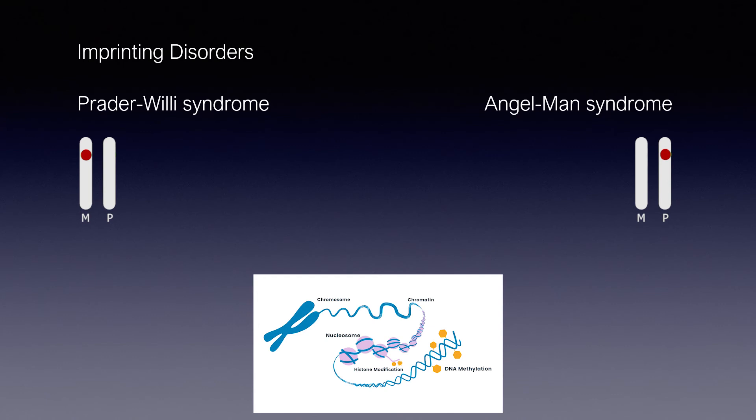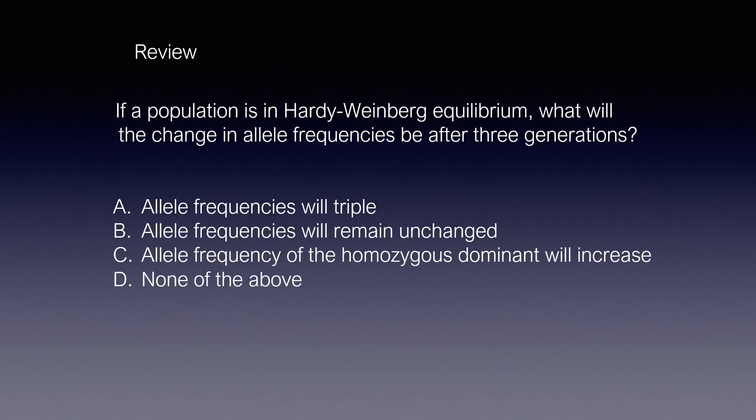The take-home here is that both are caused by an issue with chromosome 15. However, in Prader-Willi it will be a deletion or mutation of paternal origin, and in Angelman it will be of maternal origin.